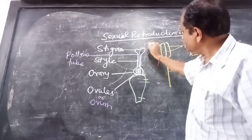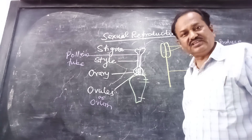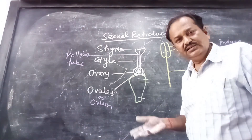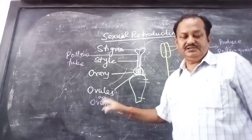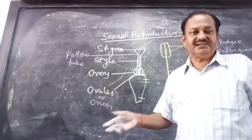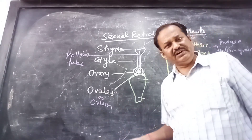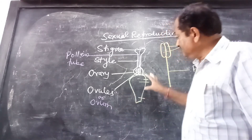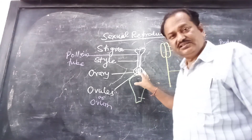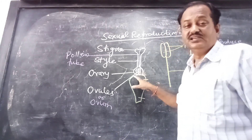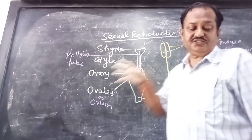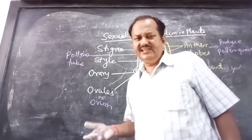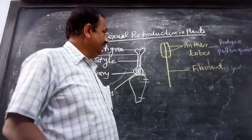The pollen grains fall over the surface of the stigma, and fertilization takes place. The ovule is fertilized, and this is how sexual reproduction occurs in plants.